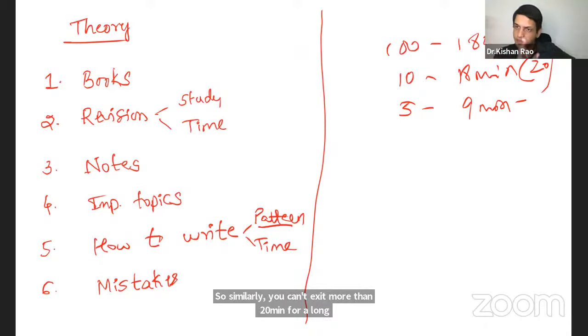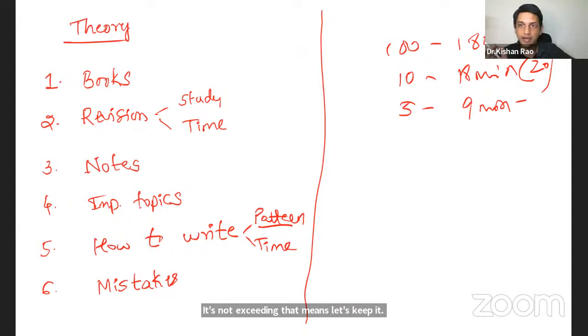So similarly, you can't exceed more than 20 minutes for a long essay. That's a timeframe. If you're exceeding, that means skip it. Leave enough page gap and go for the next question. At the end, if the time permits, you can come back and write it out. So make this a habit. Keep a timer, strictly follow that maximum of 20 minutes for a long question. Five minutes for short answer. This should be, or else what happens, you know, first question very well.